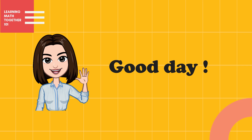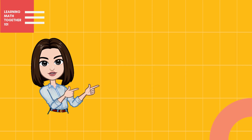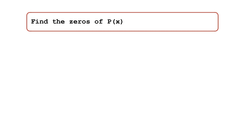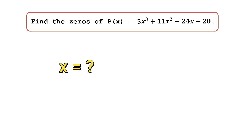Good day everyone. In this video we will be discussing the process of how to find the rational zeros of a polynomial function. To find the zeros of a polynomial means to get the values of x that will make your function equal to zero. Let's proceed to the steps so you can understand it better.